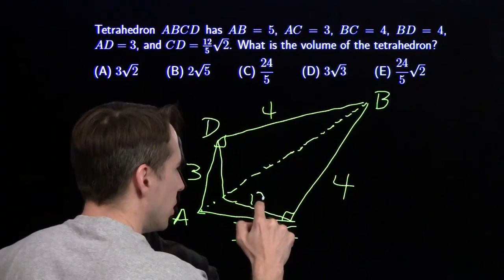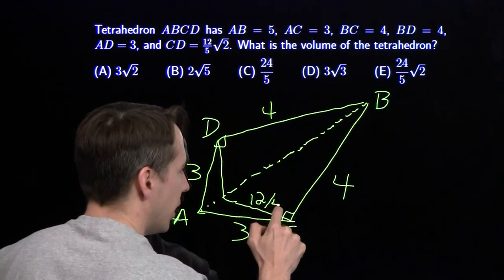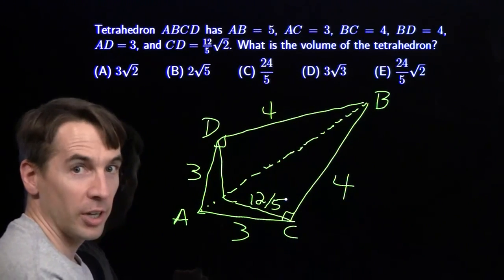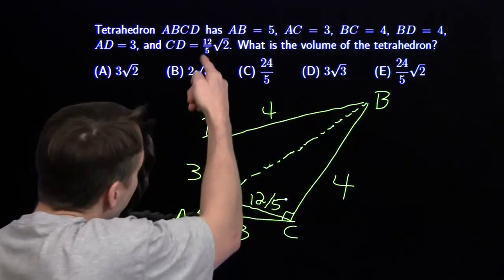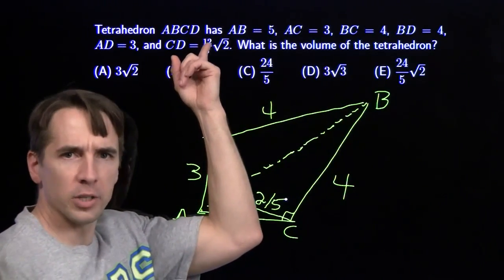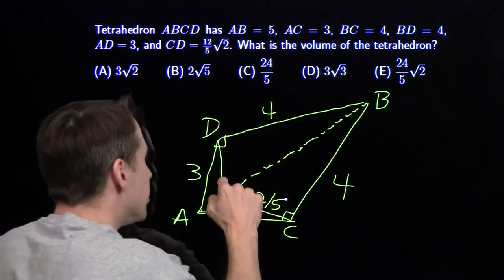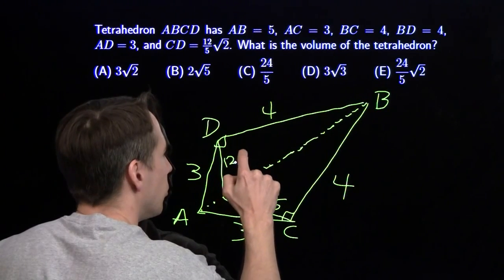Well, we know the hypotenuse is five, so this altitude has to have length twelve-fifths. That looks familiar right there, twelve-fifths. And now we're starting to get some inkling of where this weird side length comes from. This altitude also has length twelve-fifths. Of course, these triangles are congruent.